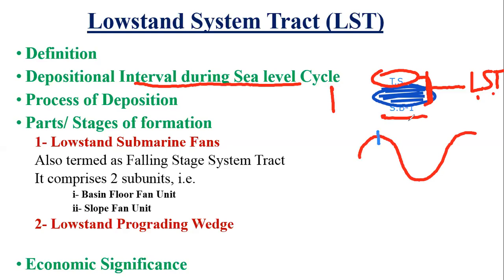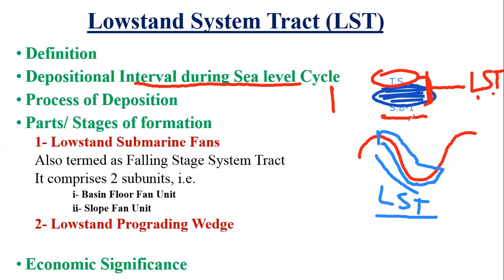During sea level fall and slow sea level rise, the system tract deposit is called Low Stand System Tract. The Low Stand System Tract is bounded below by the Type 1 sequence boundary and above by the transgressive surface, also called the first major marine flooding surface — these two terms are the same.